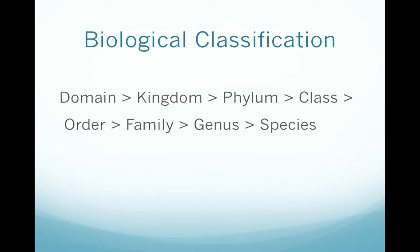When we talk about the scientific name of an organism, the scientific name is the genus-species name. For example, the scientific name for a house cat is Felis catus. Felis is the genus name, and catus is the species name. Some organisms also have subspecies, which would be one level lower than species.